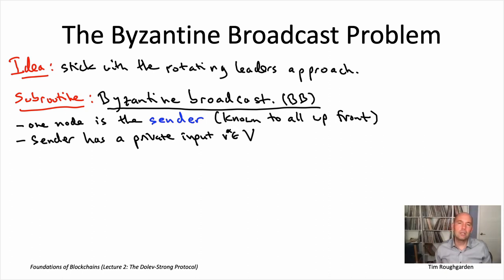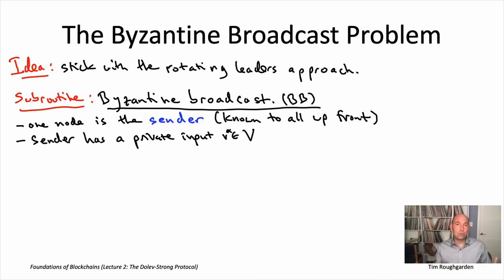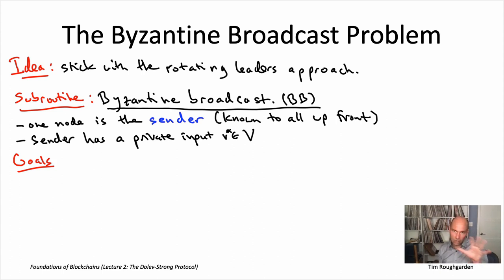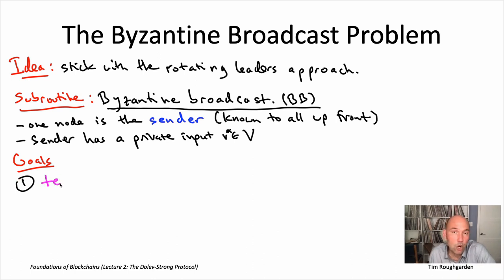Our intention for this Byzantine broadcast subroutine is to play the role of one of the steps in our simple rotating leader protocol. When it was a node's turn to be the leader, they would directly send their ordered list to everybody else, and everybody would just believe them because by assumption everybody was honest. Here again, when it's a particular node's turn to try to send out their ordered list of transactions, they want to communicate that to all of the honest nodes. But now we want to achieve this broadcast functionality even in the presence of at most f Byzantine nodes. Just like with the SMR problem, we need to be a little bit careful about what we mean by correctness — we're going to insist on one safety property and one liveness property.